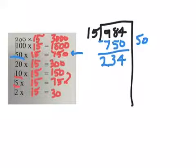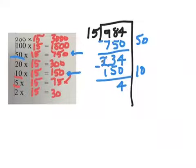What number is close to, but not over 234? That would be 150. And that's 10 15s. So I do this, and just for sake, I'll borrow like the kids do. So now I have 84. And what number is close to, but not over, that would be 75.